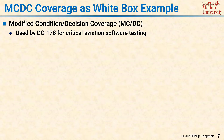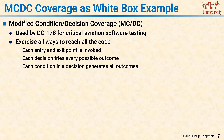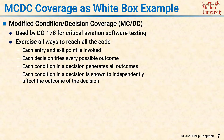MCDC coverage exercises all the ways to reach all the code. The criteria for MCDC coverage are that every entry and exit point is invoked, every decision tries every possible outcome, each condition in a decision generates all the outcomes, and each condition in a decision is shown to independently affect the outcome of the decision.